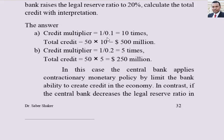Total credit equals 50 million times 10, giving 500 million. If the central bank increases the required reserve from 10% to 20%, the credit multiplier becomes 5 times, meaning 1 pound of original deposit generates only 5 pounds of credit instead of 10. When the central bank increases the required reserve, the credit multiplier decreases — this is contractionary monetary policy.